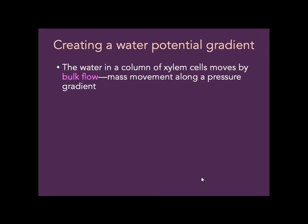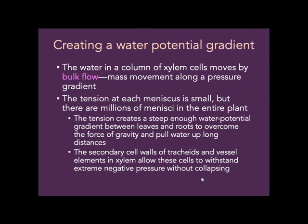The water in a column of xylem cells moves by bulk flow — a mass movement along a pressure gradient. The tension at each meniscus (the surface where water meets air) is very small, but there are millions of such places throughout the entire plant. That tension creates a steep enough water potential gradient between the leaves and the roots to overcome gravity and pull water up long distances. Secondary cell walls in the tracheids and vessel elements of the xylem are heavily reinforced with cellulose and lignin, allowing these cells to withstand the negative pressure without collapsing.